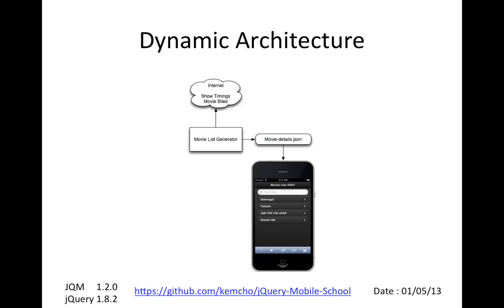The basic architecture is: from the internet we will find out what the latest movies are — and this keeps changing. We'll write a movie list generator software that gets the movies from the internet and then outputs a movie details JSON object. That will be covered in an upcoming video. In this video we'll assume that we already have all the dynamic data for our jQuery Mobile website in this JSON object.